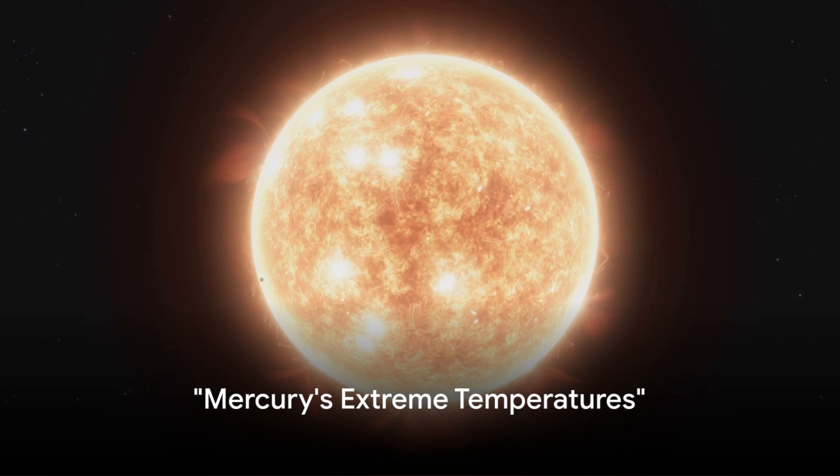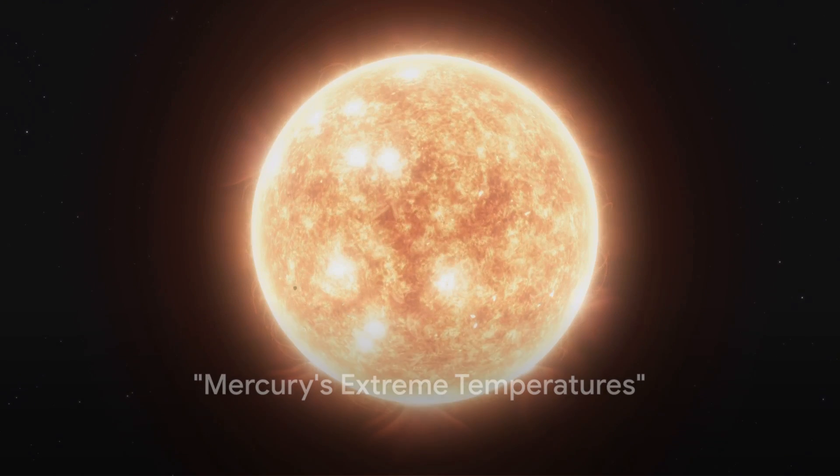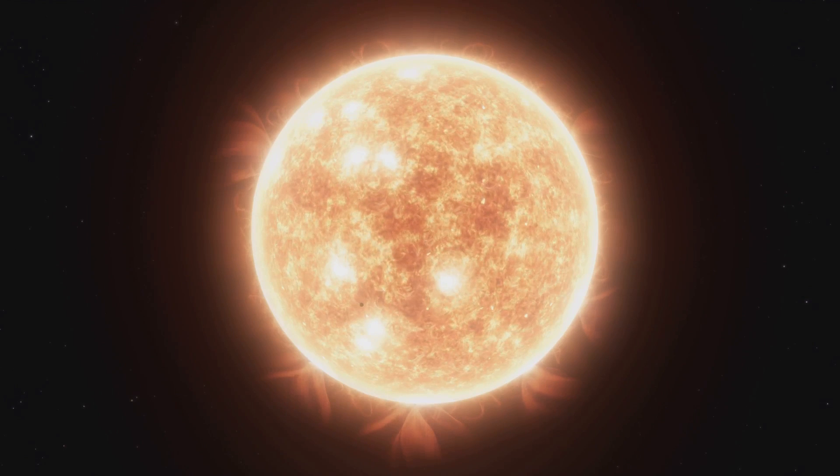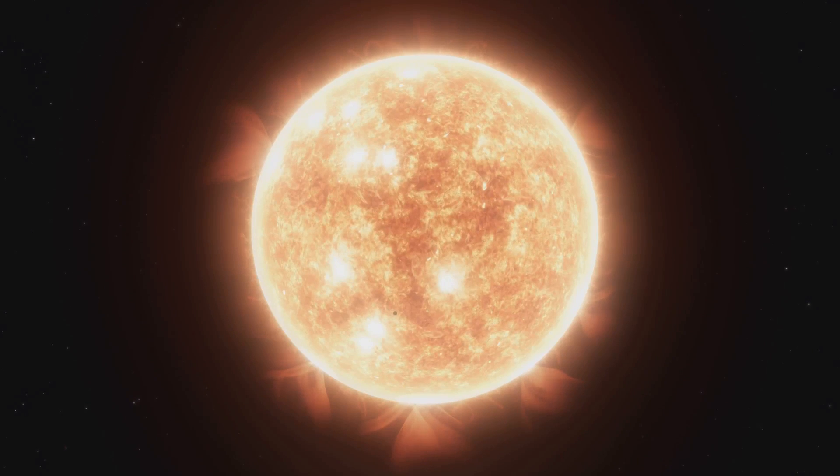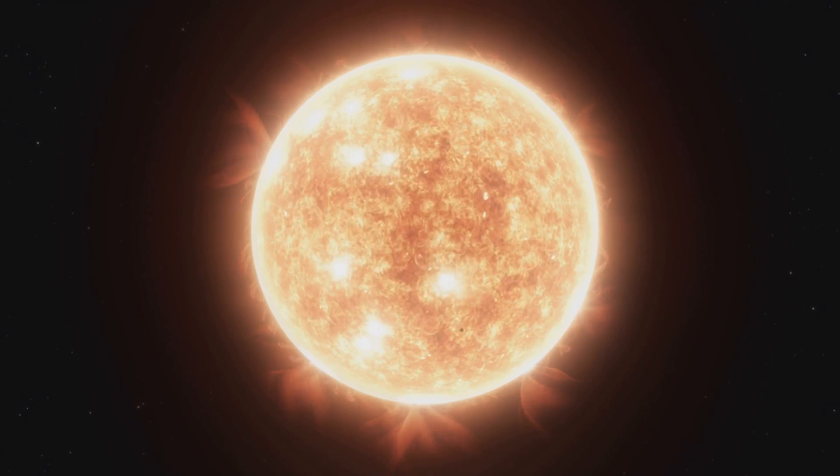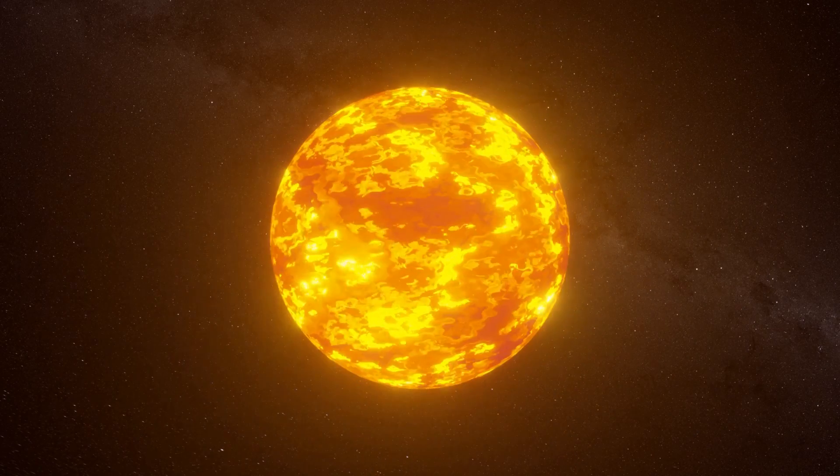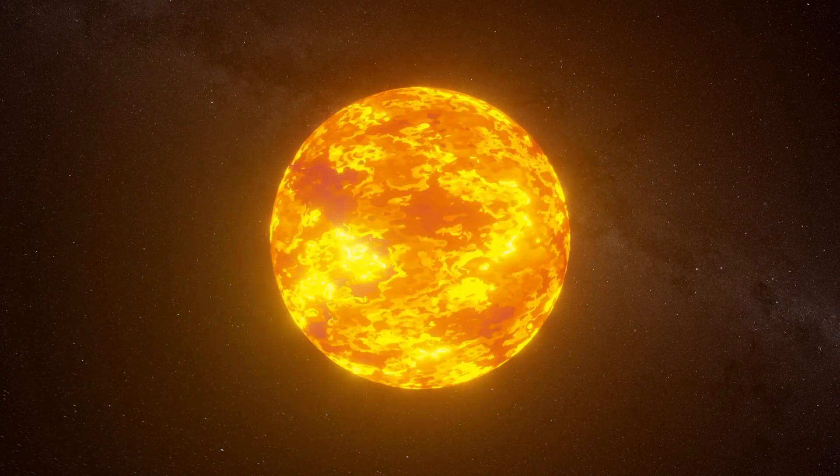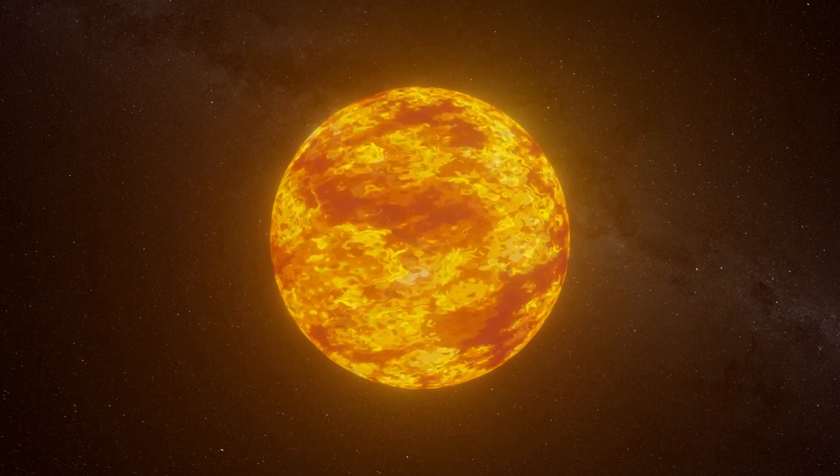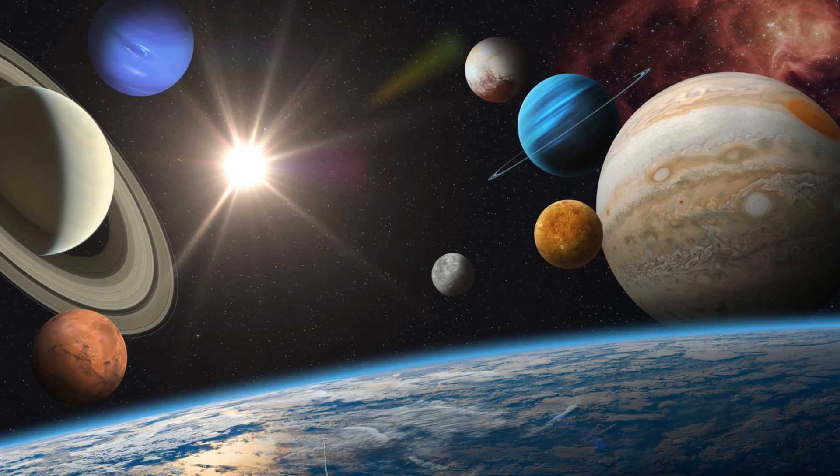Mercury is a planet of extremes with the most intense temperature fluctuations in the solar system. This tiny gray sphere spinning in the darkness of space is a world of fire and ice. This is due to its proximity to the Sun, as well as its lack of substantial atmosphere, two factors that create a drastic divide between its day and night temperatures.